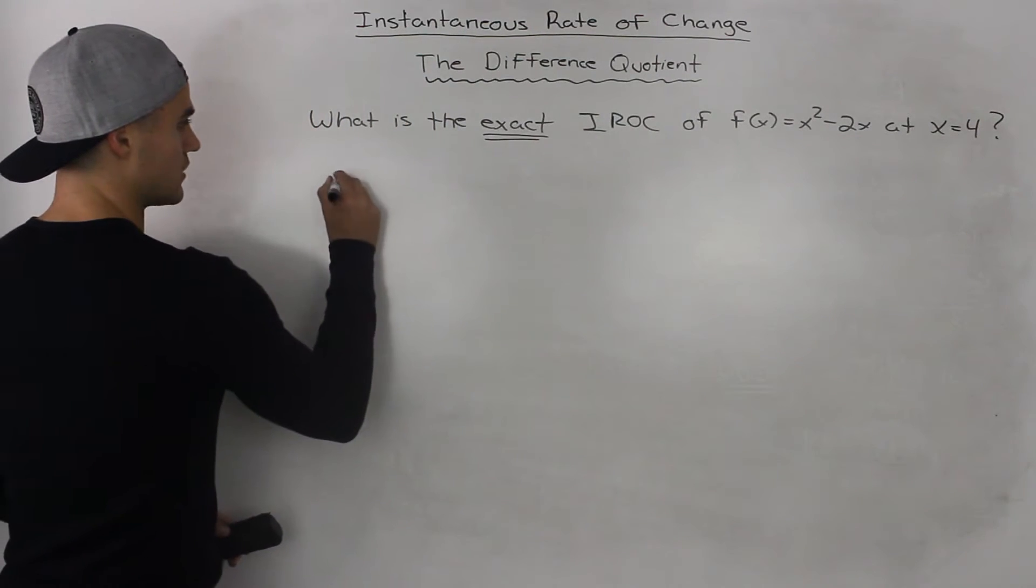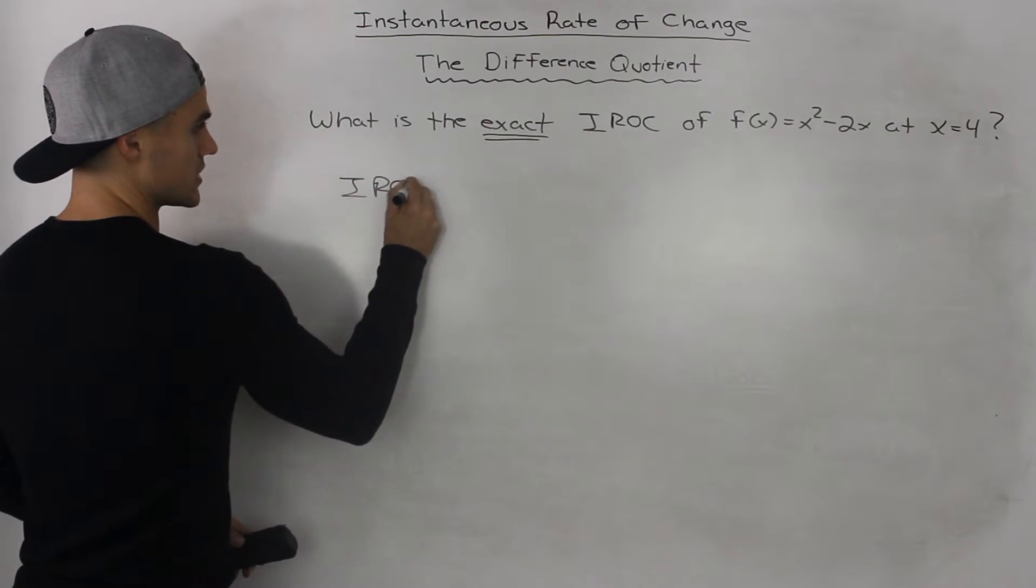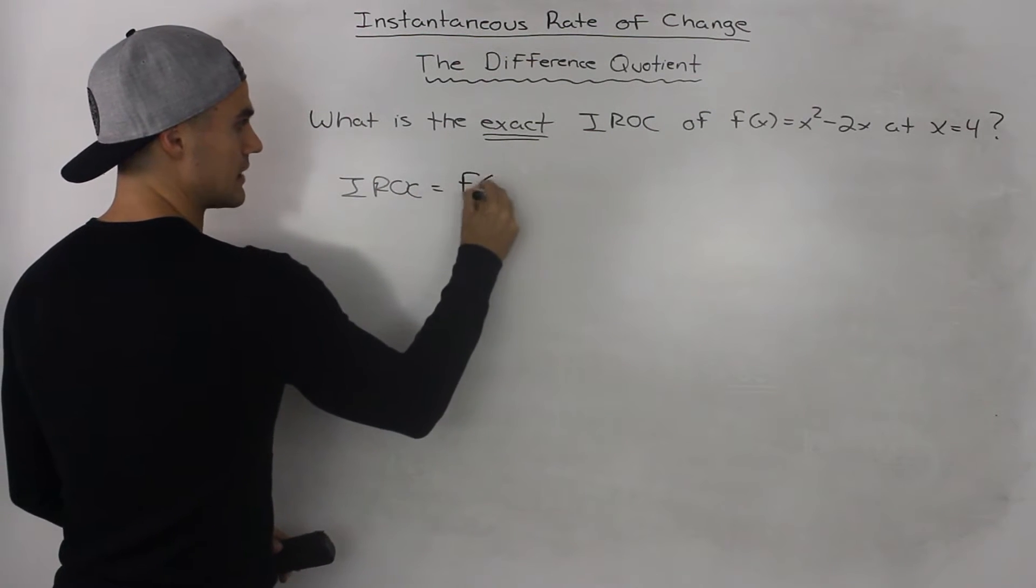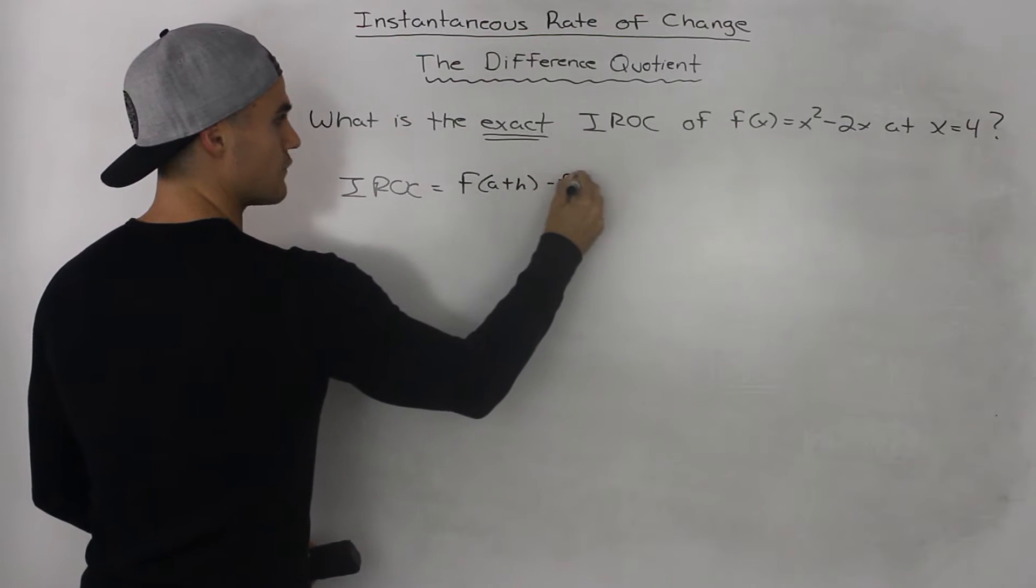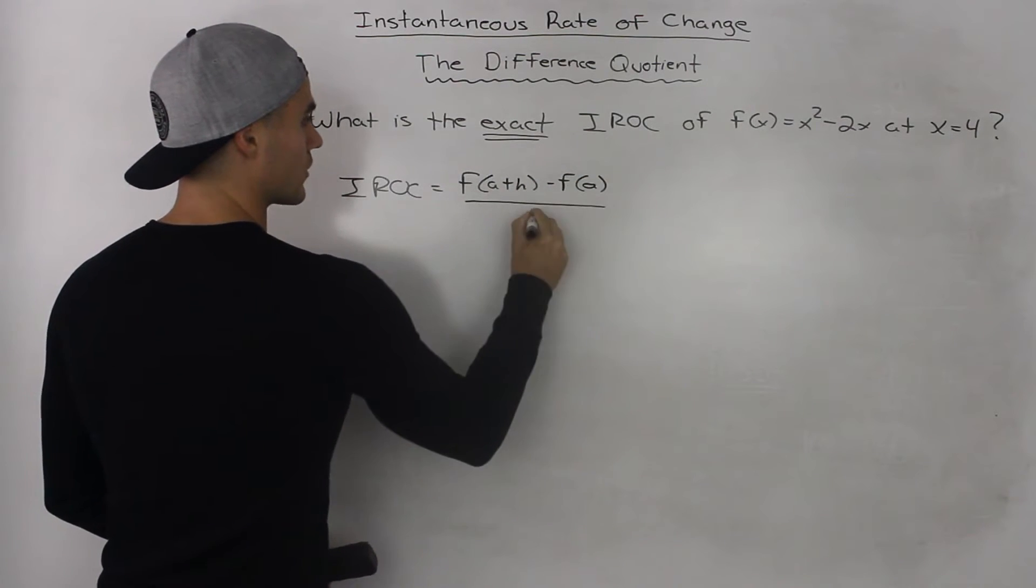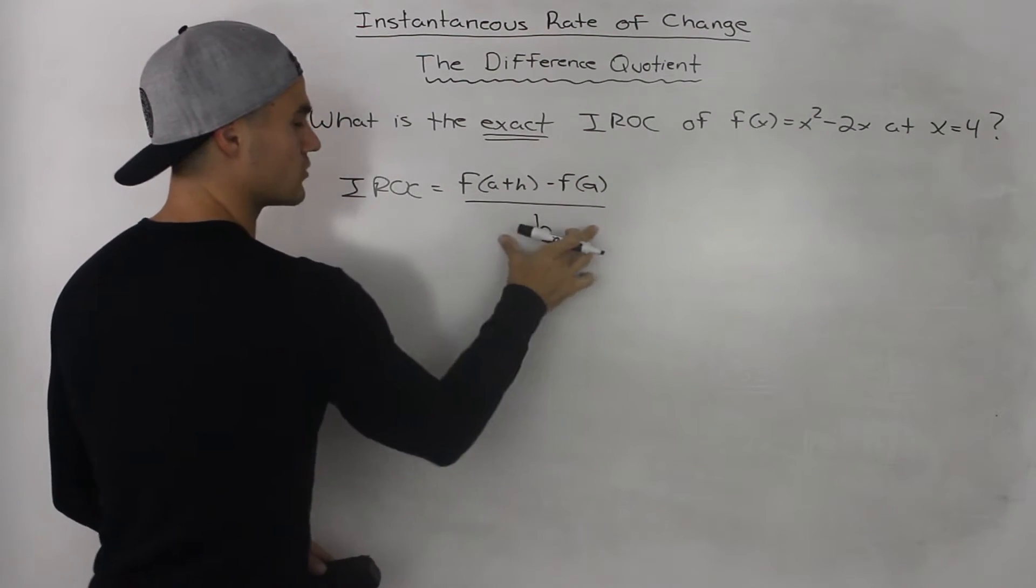So let's rewrite what the difference quotient is. So it would be f of a plus h minus f of a all over h. So this is the general difference quotient.